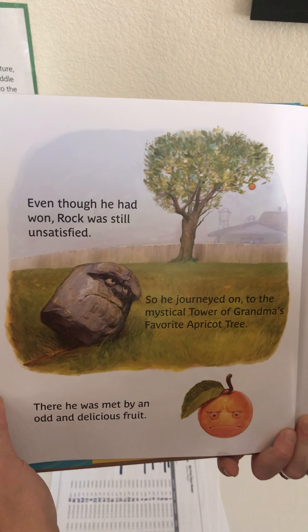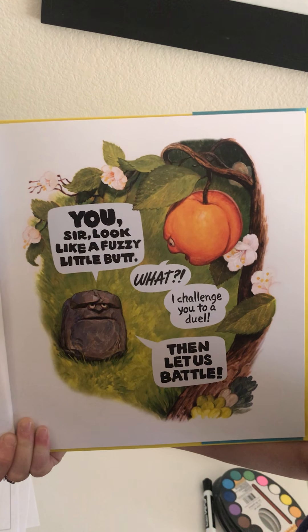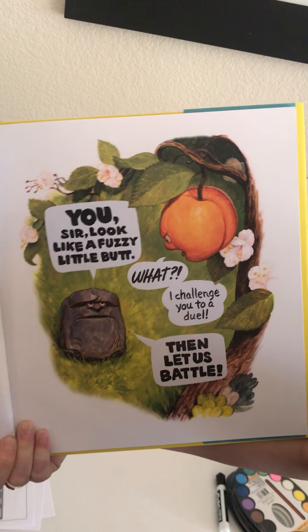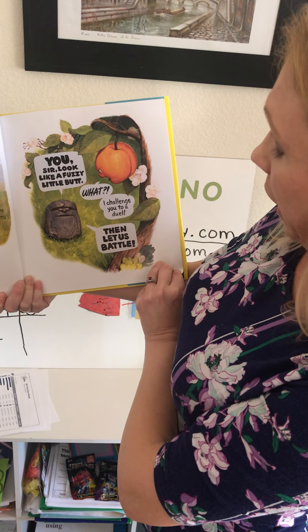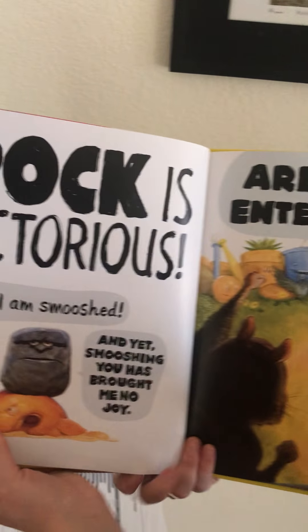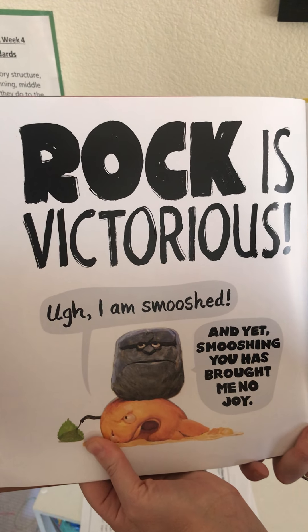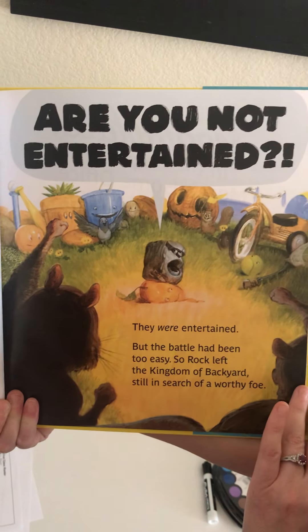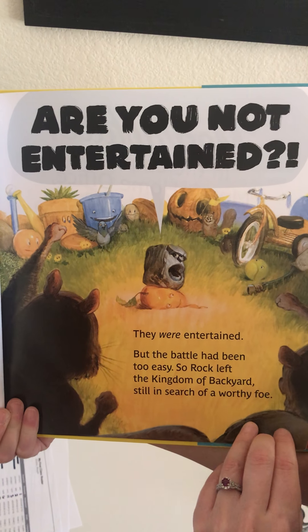So he journeyed on to the mystical tower of grandma's favorite apricot tree. There he was met by an odd and delicious fruit. 'You, sir, look like a fuzzy little — but what? I challenge you to a duel.' 'Then let us battle.' Now I want you to think for a second and predict who you think is going to win. I think you probably have this one right. Rock versus apricot. 'I will beat you, Rock, with my tart and tangy sweetness.' Rock is victorious. 'I am smushed, and yet smushing you has brought me no joy. Are you not entertained?' They were entertained, but the battle had been too easy. So Rock left the Kingdom of Backyard still in search of a worthy foe.